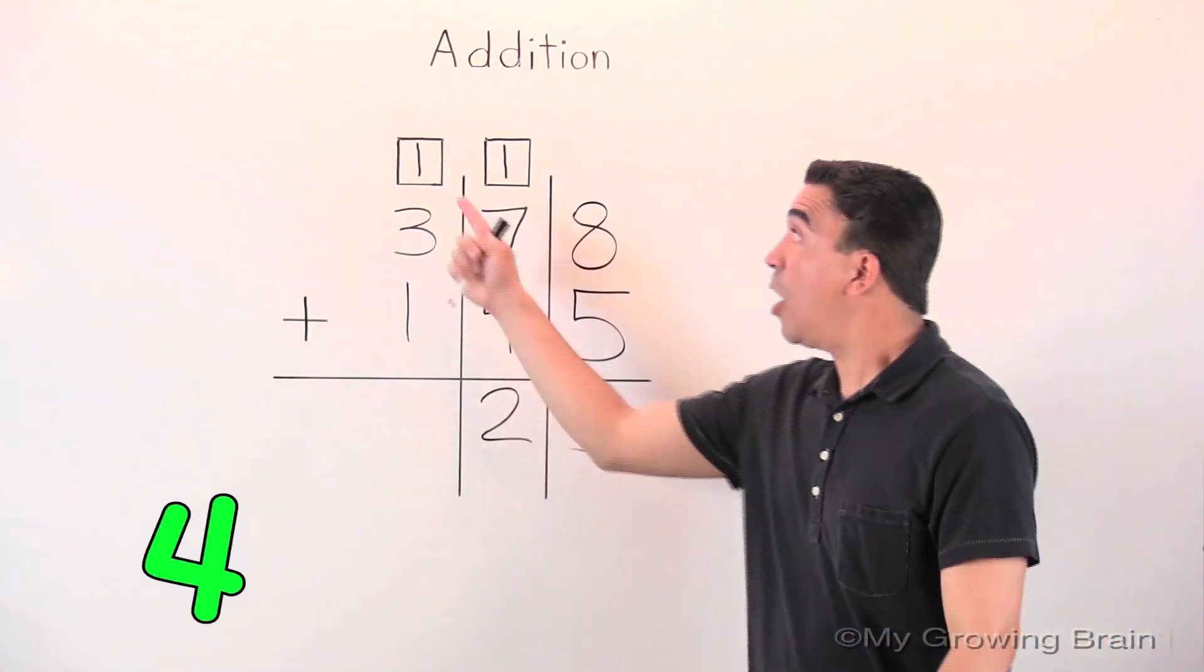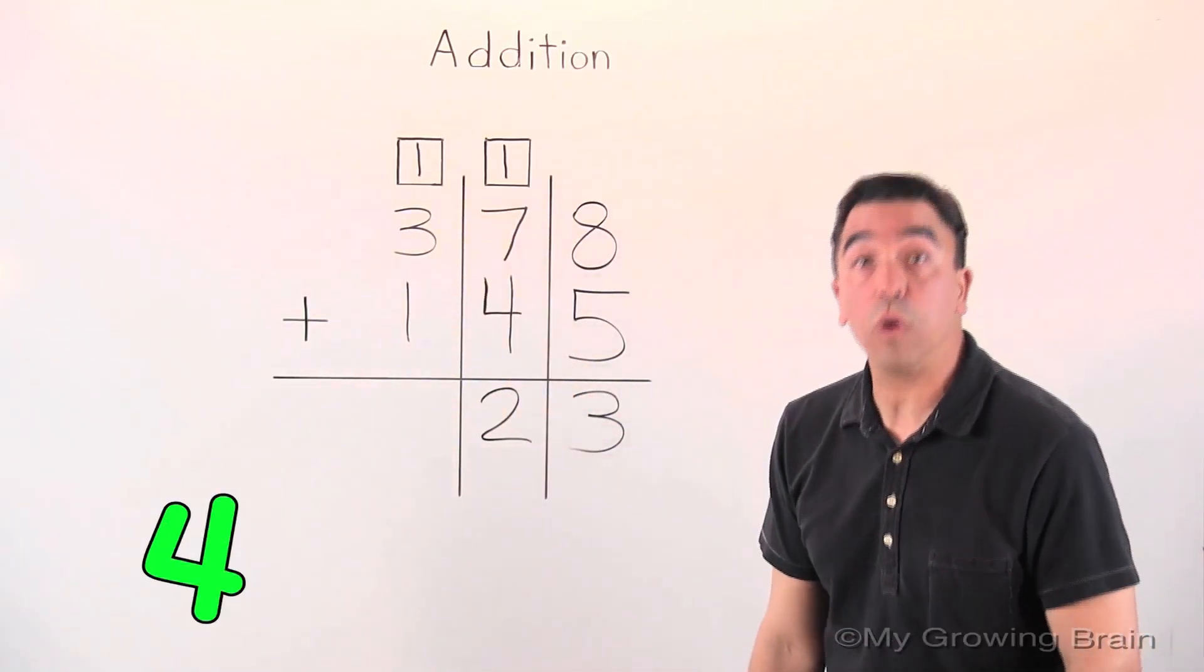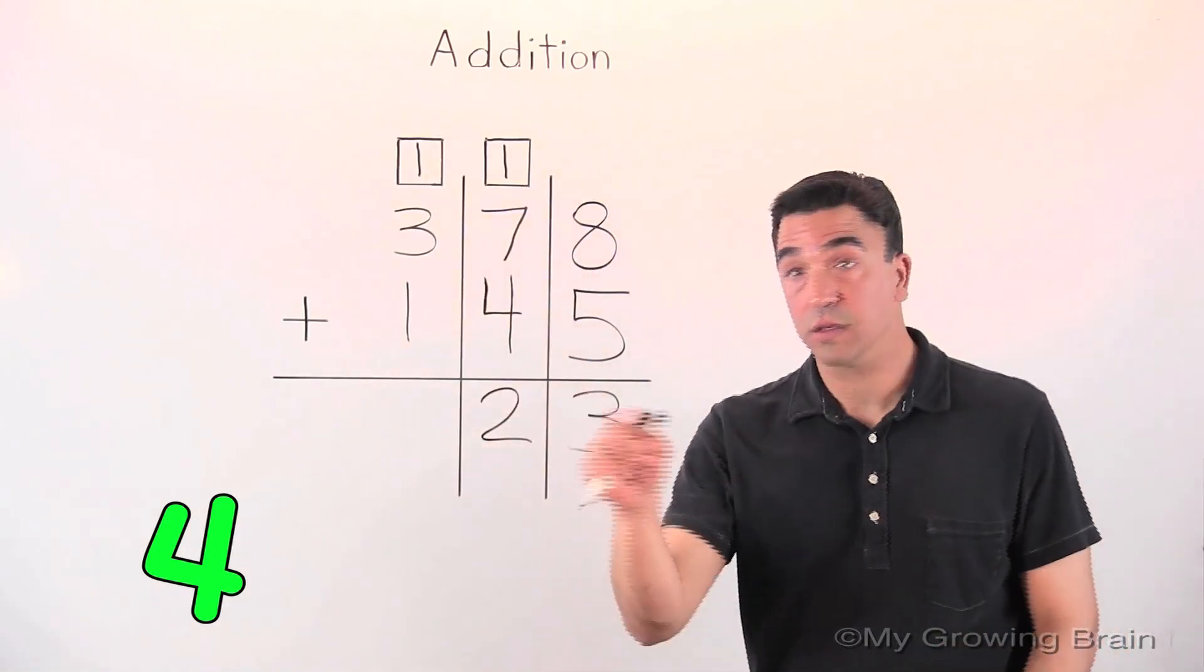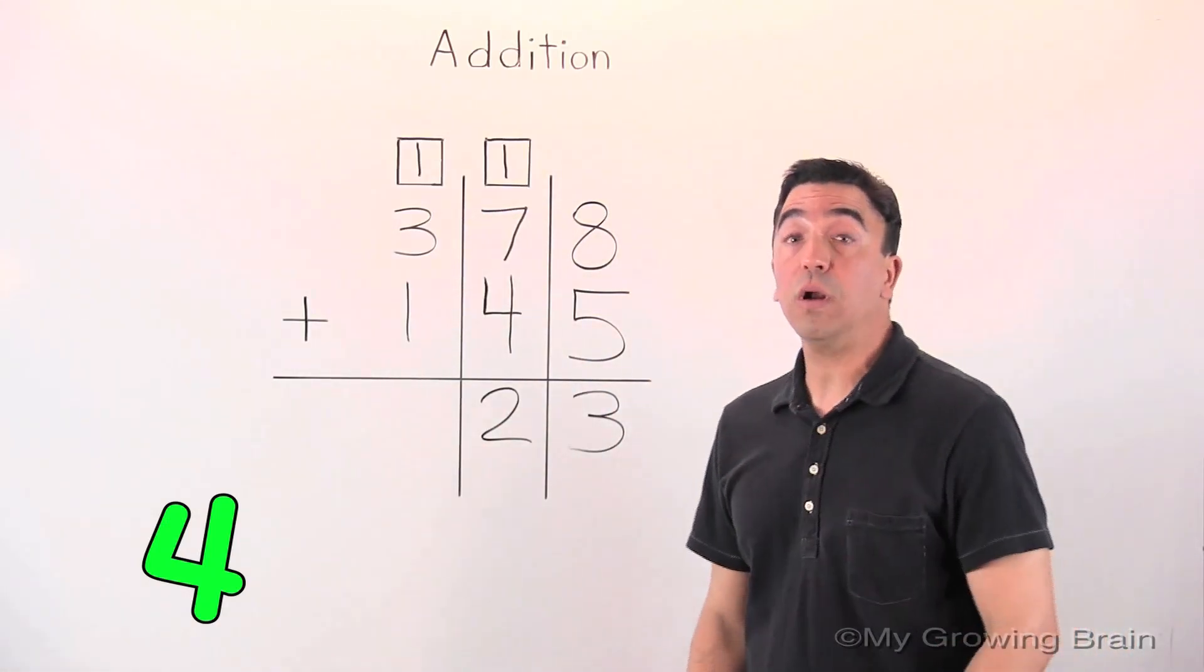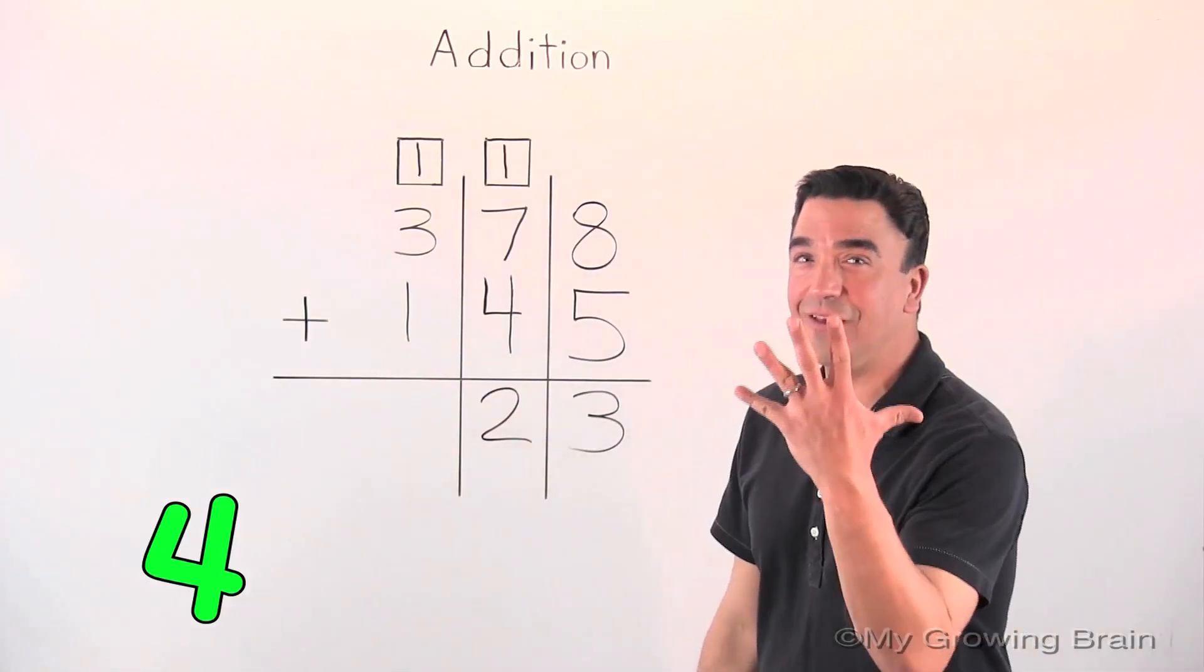But once again, we have a one in our work mat. So we have to add that one to the four. Four plus one is five.